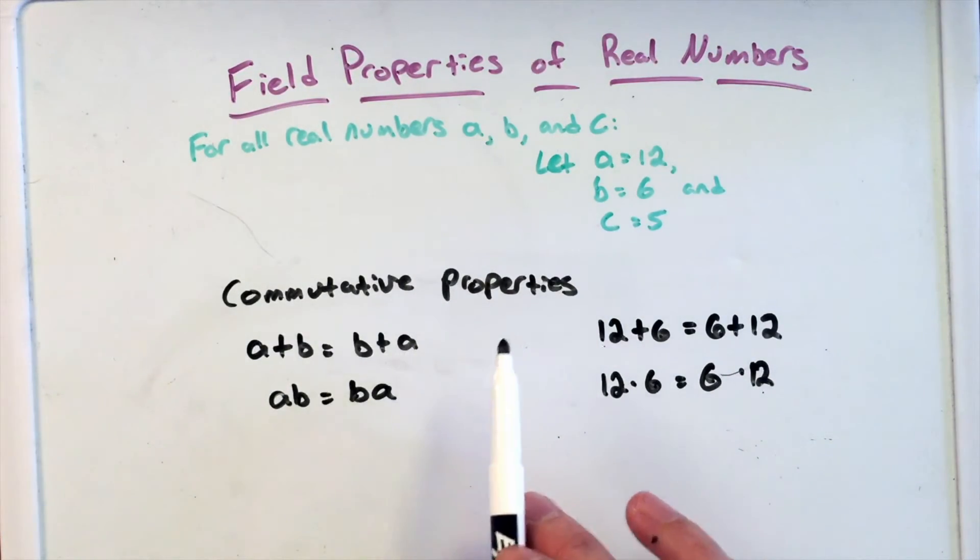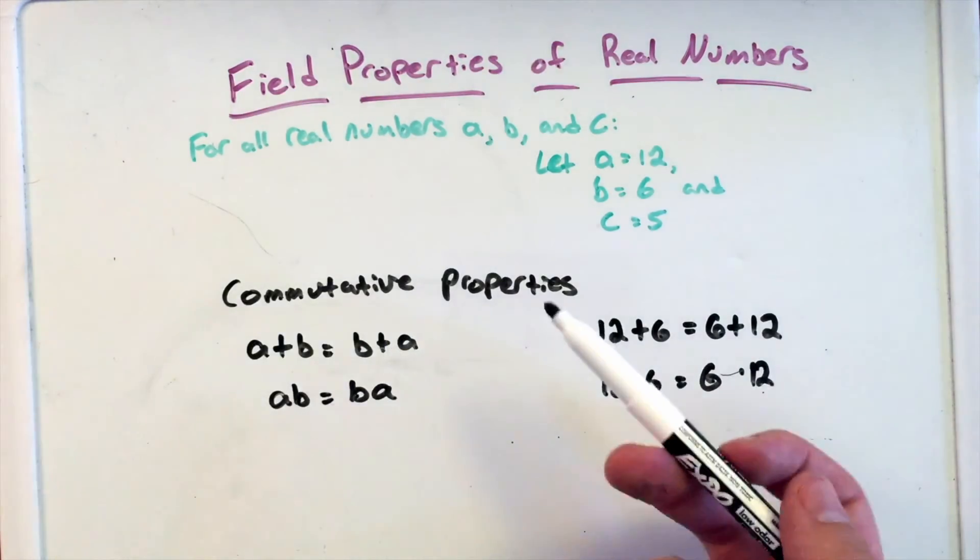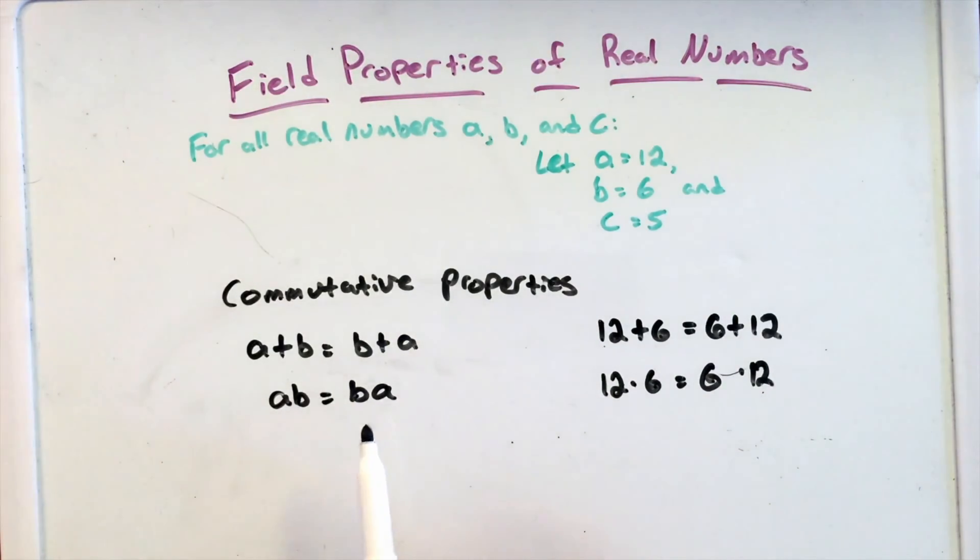This is what we call the commutative property. Commutative property of addition, commutative property of multiplication. Thank you for watching.